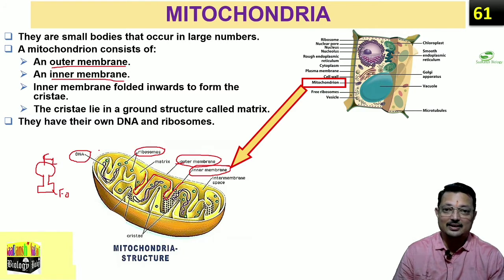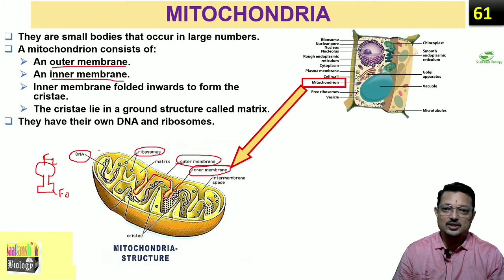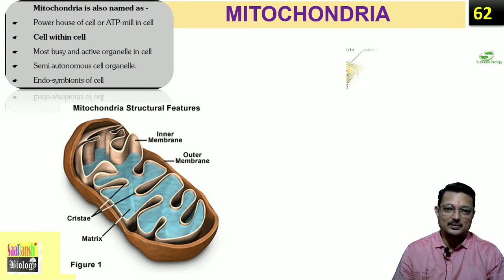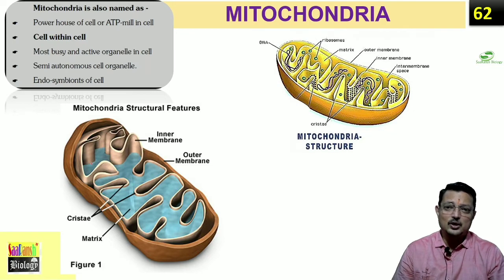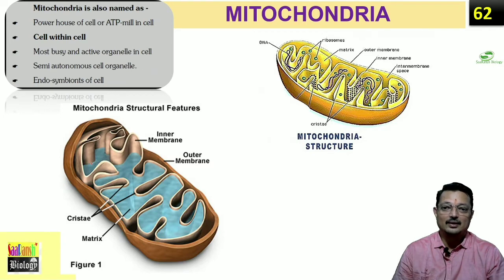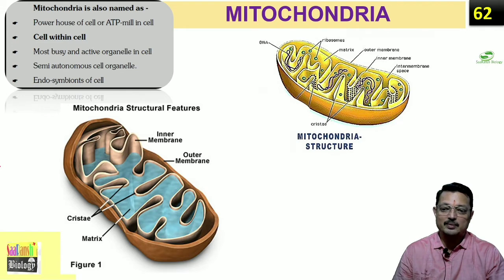Because mitochondria has its own genetic material, we call it a semi-autonomous organelle. Remember this — a common exam question is 'name the cell organelle having its own genetic material.' Mitochondria is called the powerhouse of the cell, it is the most busy and active organelle, semi-autonomous, and an endosymbiont. It is called semi-autonomous because it has its own circular DNA — approximately 1% of the total DNA of an organism is contributed by mitochondrial DNA.